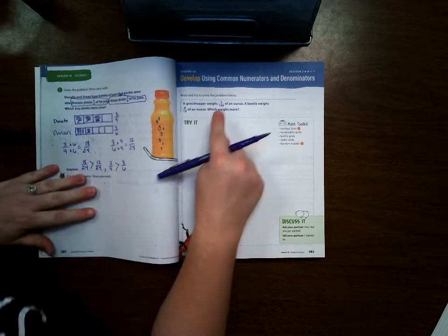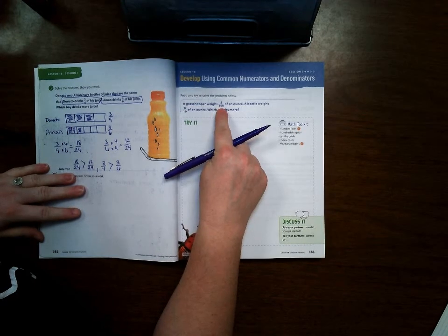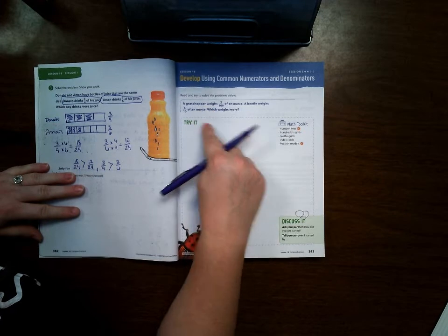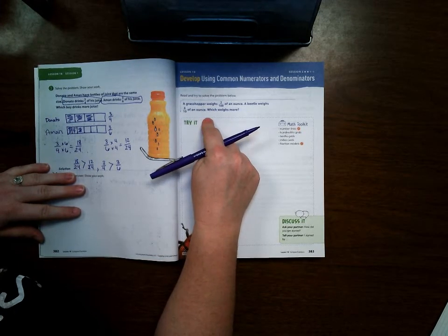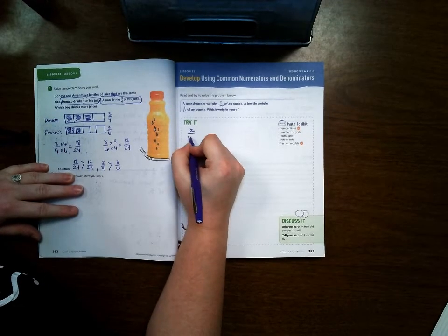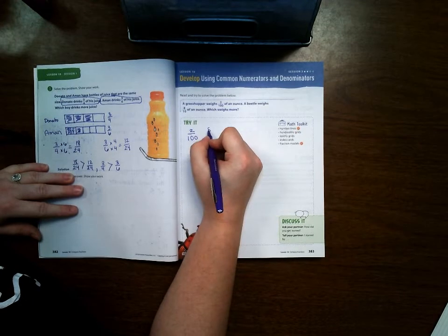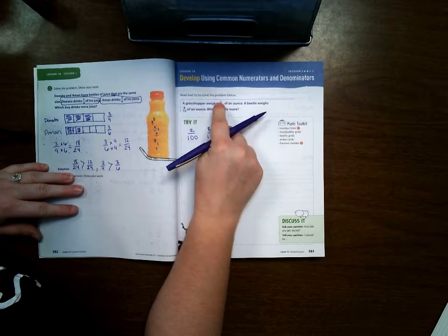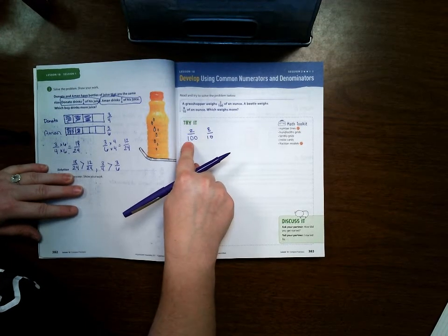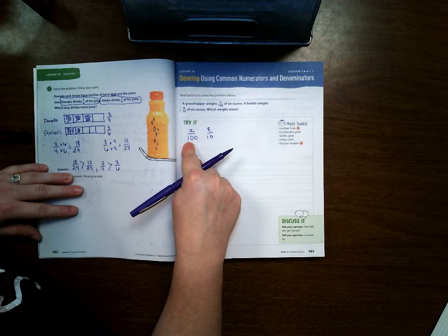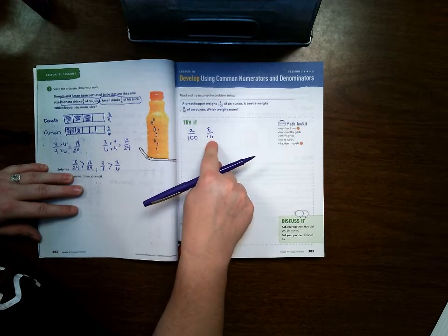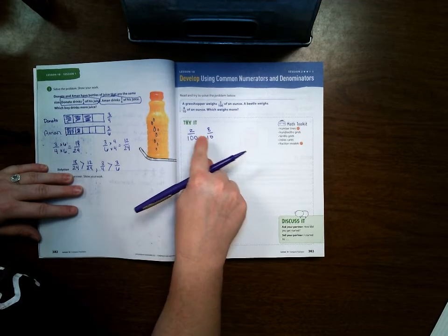Because we have such a large number right here it's going to be a little bit harder for us to be able to draw like a bar model like we have in previous lessons, so on this one we are definitely going to have to make a common denominator. If you compare 2/100 to 8/10 I can easily see that I can make 10 into 100. So instead of making a common denominator by multiplying 100 times 10 and 10 times 100, I'm just going to turn this 10 into 100.